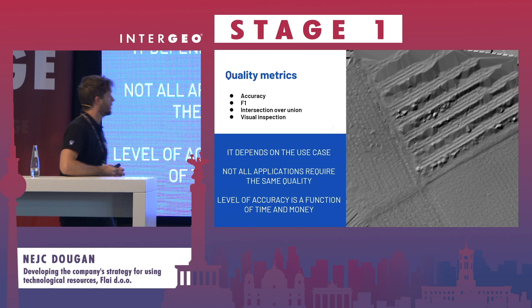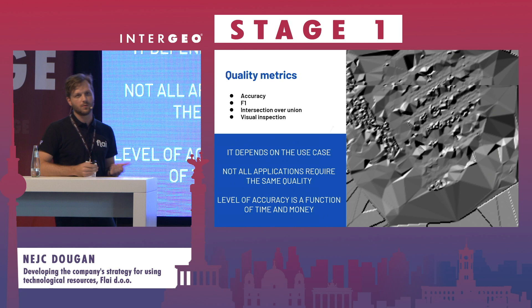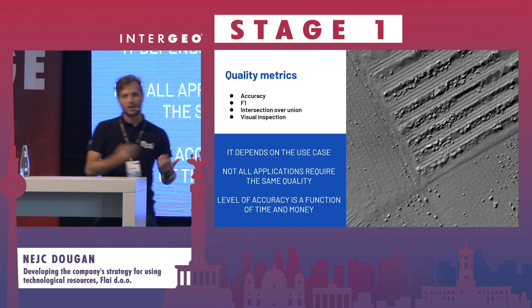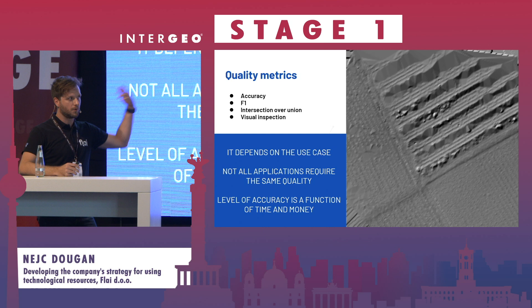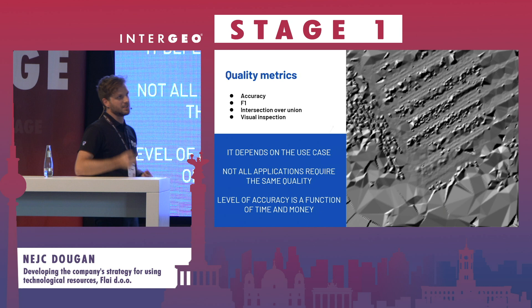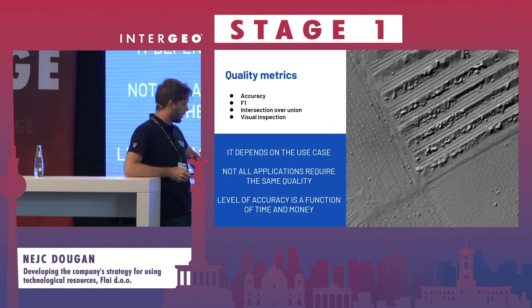One thing to note is that everybody would like to have 100% accuracy in classification. But to be frank, 100% is practically inachievable — for human annotators or for machine learning systems. And if it is achievable, it is prohibitively expensive to check each individual point to have the correct annotation.